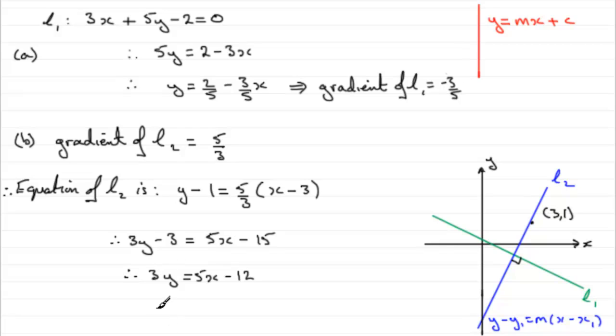And then divide both sides by 3, and you end up with y equals 5x over 3, or you could think of it as 5 thirds x, and then minus 12 divided by 3, well that's going to be minus 4. And that's in the form then, y equals mx plus c.